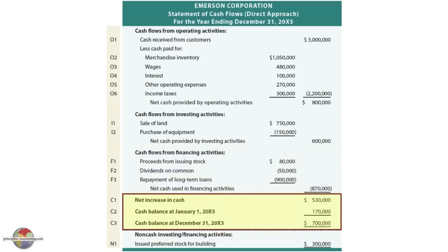Finally, we're just showing the change in cash. Cash increased — the net of the three sections — $530,000. In this case, the company started with $170,000 and ended with $700,000 of cash. There's also a separate amount that needs to be disclosed, either attached to the bottom of the statement or in related notes, showing non-cash investing and financing transactions, such as issuing stock in exchange for a building where no cash changed hands directly.